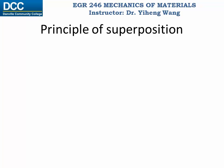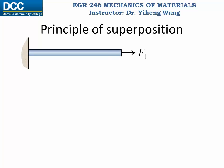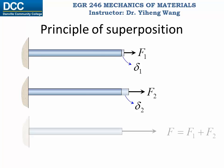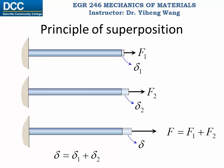But first let's introduce the principle of superposition. For example, for a member subjected to axial force F1 causing it to elongate, let's say the displacement is delta 1. For the same member subjected to a different axial force F2, let's say the displacement is delta 2. Then for the same member subjected to a force equal to F1 plus F2, the deformation can be assumed to be delta equals delta 1 plus delta 2. And this is the principle of superposition.